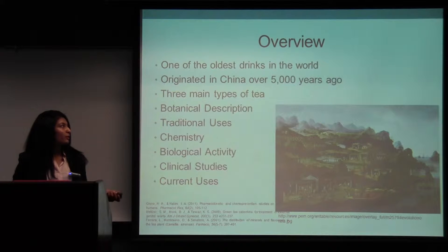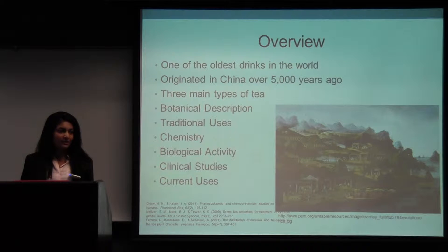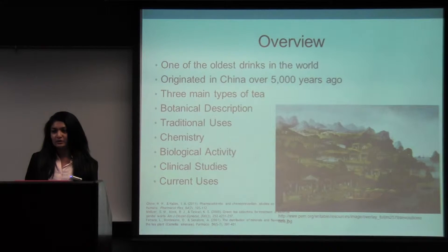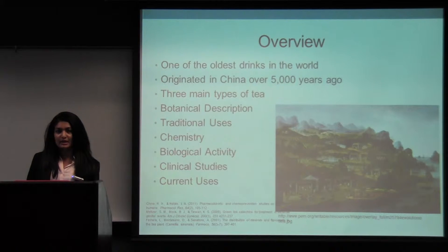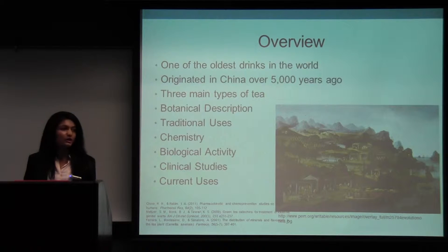A quick overview of what we will be talking about: tea is one of the oldest drinks in the world, with origins dating back over 5,000 years ago in China. Today it is the second most widely consumed beverage in the world after water. There are three main types of tea: green tea, oolong tea, and black tea. Green tea and oolong are mainly consumed in Asian countries, while black tea is consumed in Western countries.